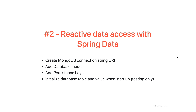MongoDB is a cross-platform document-oriented database program. MongoDB uses JSON-like documents with schema that gets persisted and is retrievable via document ID. Our application will persist product entities using a Reactive Spring Data repository as documents in MongoDB.